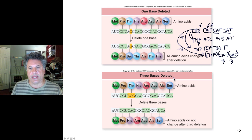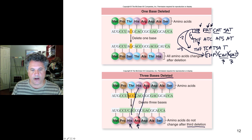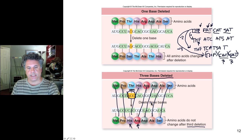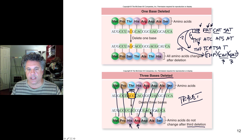Deleting three bases restores the reading frame — we're missing the amino acid threonine, but the rest of the sequence — histidine, arginine, aspartate, alanine, serine, methionine, and proline — is produced intact in a sensical way. From this, they deduced that the genetic code is a triplet code: RNA derived from DNA is read into protein sequences by reading three nucleotides at a time, with each group of three nucleotides specifying one amino acid.